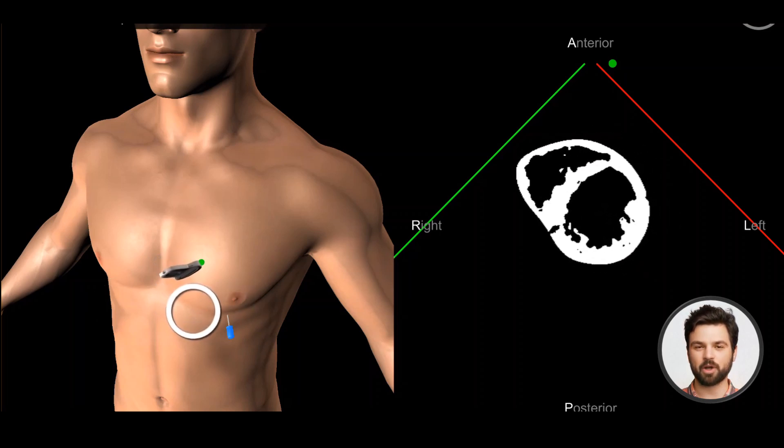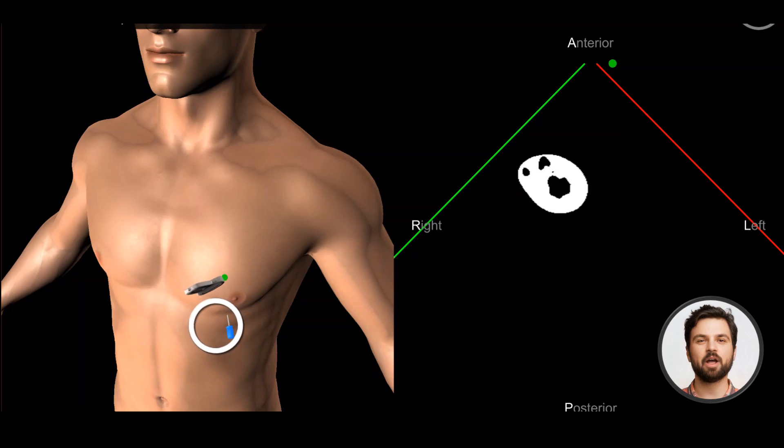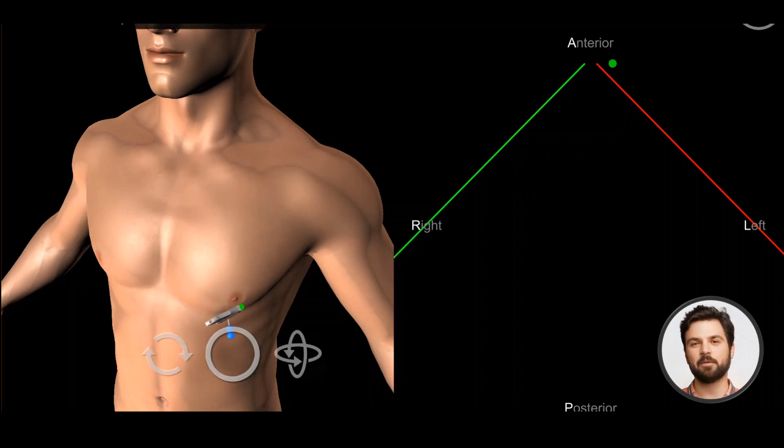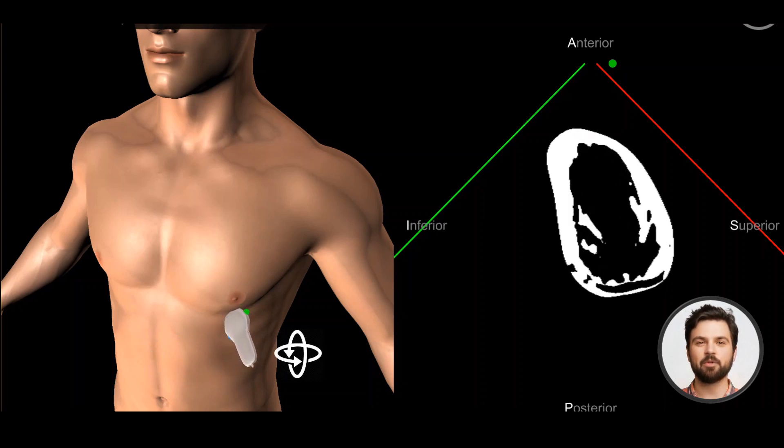Slide the probe over the chest wall until you reach the apex of the heart. This is the point of maximal cardiac impulse. The apex is normally located over the 4th or 5th intercostal space in the mid-clavicular line.